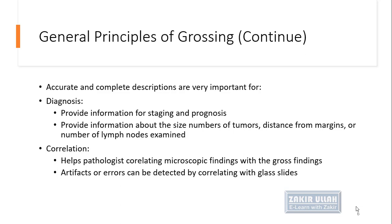Gross examination also helps in correlating the microscopic findings with the gross findings — what was expected in the gross, and after processing the representative sections for microscopic examination, whether both correlate with each other or there is a discrepancy. Also, artifacts of ink, markers, dust particles, or errors such as mislabeled or swapped samples can be easily detected by correlating the glass slides with the gross examination, helping remove errors and artifacts.